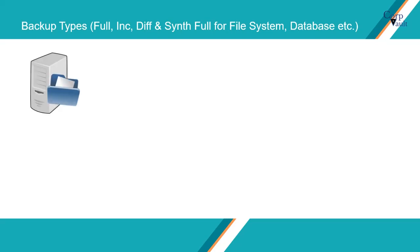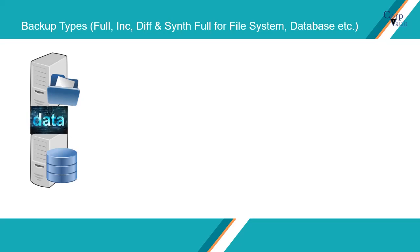Let's pick two servers: a file server and a database server. In both servers, the common element is data, but the use might be different. For a server, the operating system is common, be it Windows or Unix. The way Unix works is different. For Windows, apart from operating system files, you have system state.